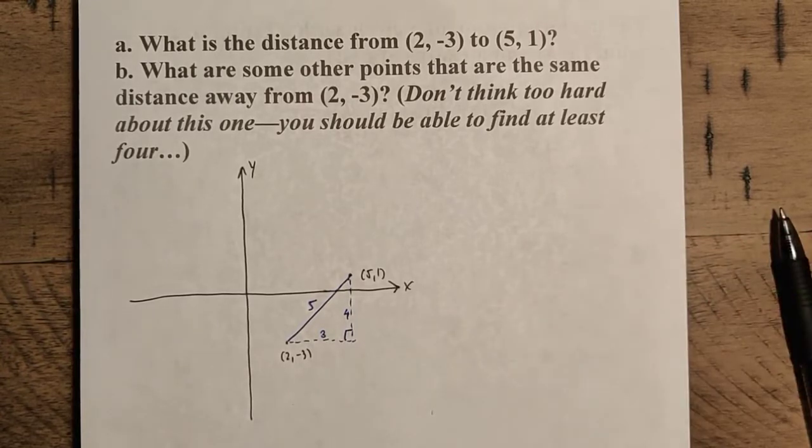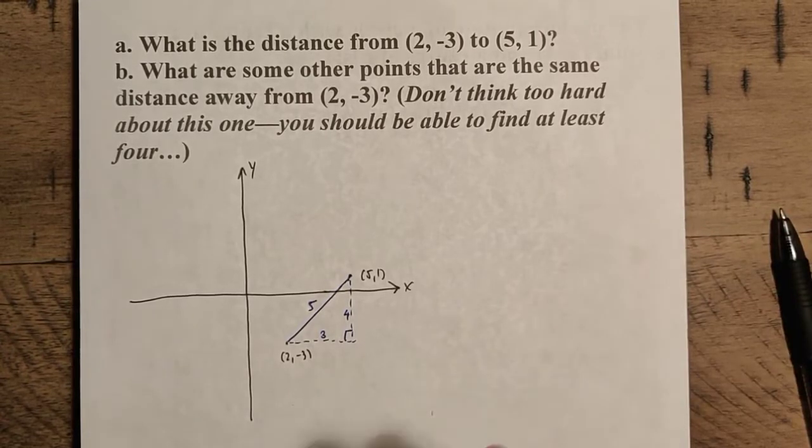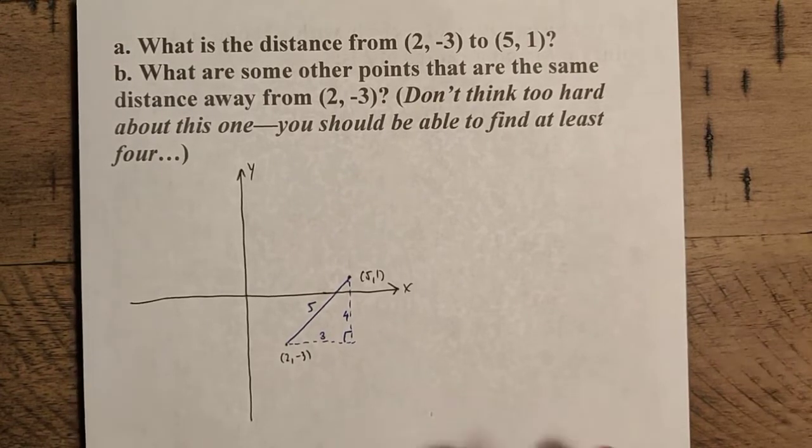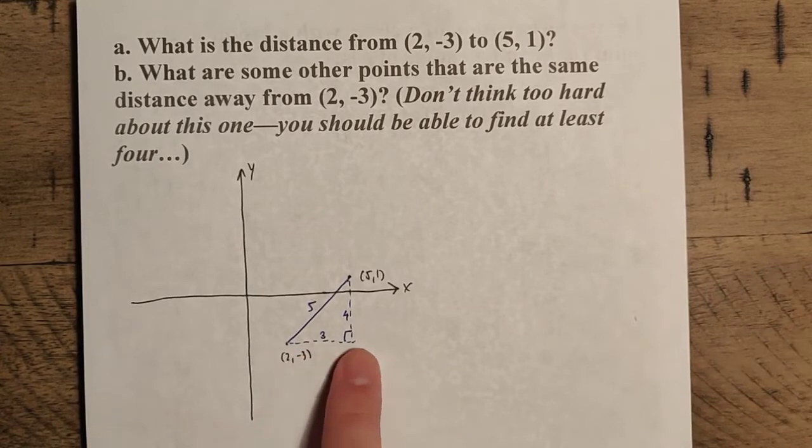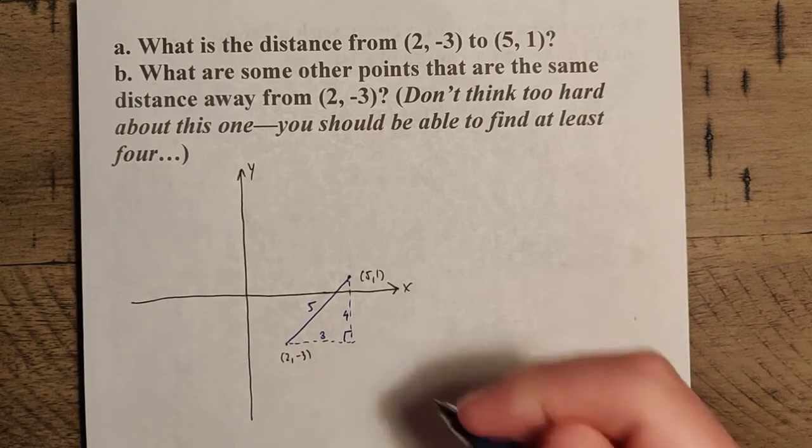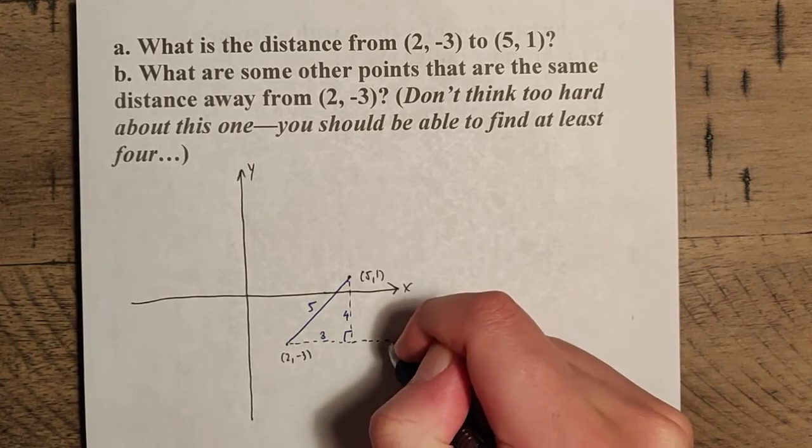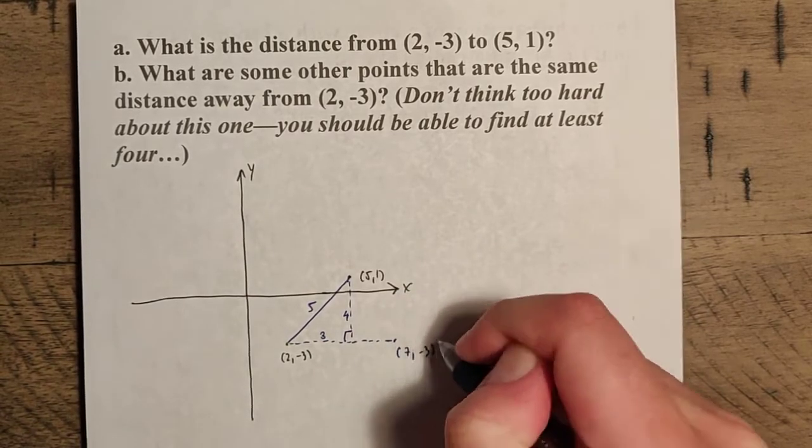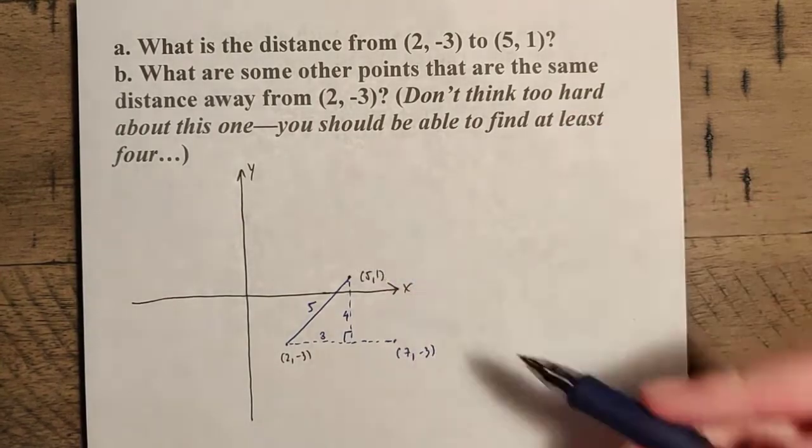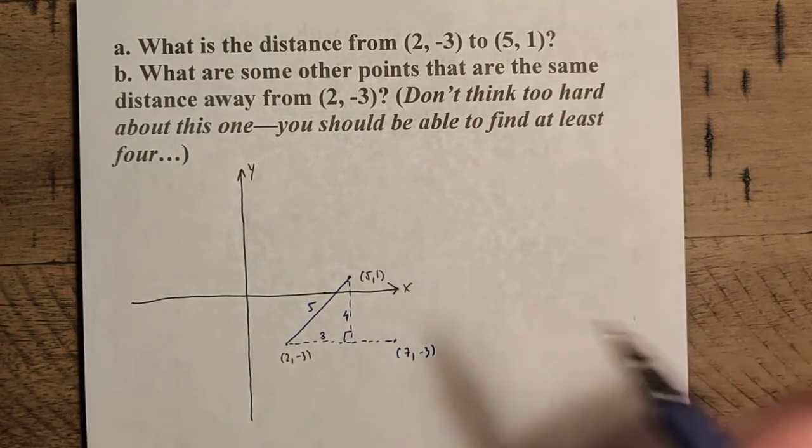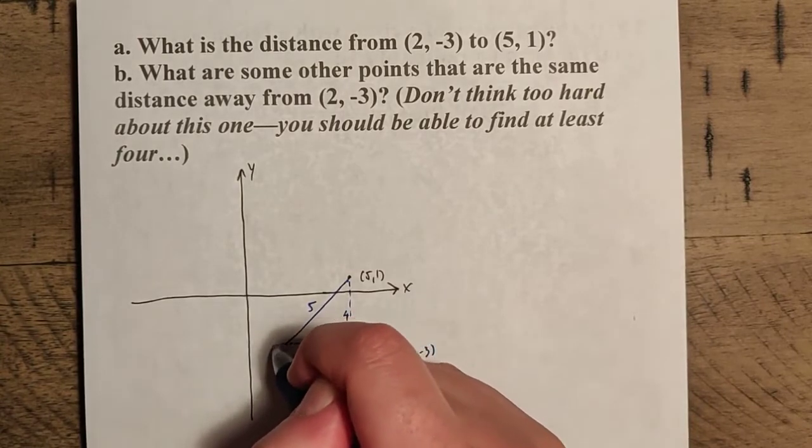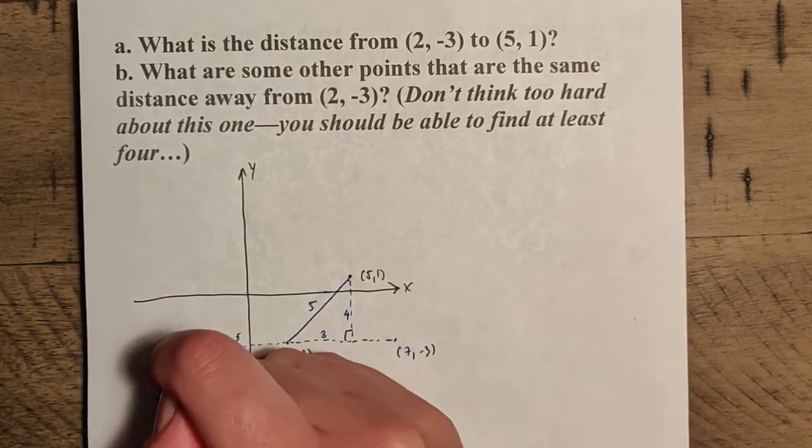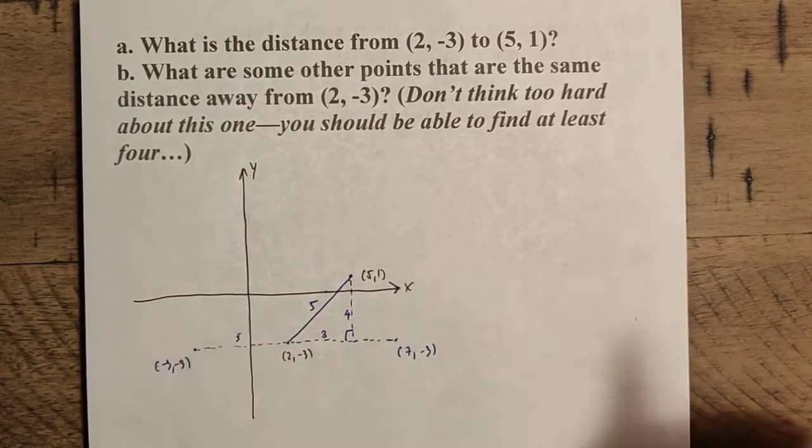Now, another thing we can consider is what are other points that are also the same distance away? What are all the points that are also five units away from two negative three? If we think about what's going on with this, we can continue two outward like this and get to a new point. We can get to seven comma negative three, because that's three units this way and then an additional two. And from there, we can go in the opposite direction as well, go five in this direction and get negative three comma negative three.